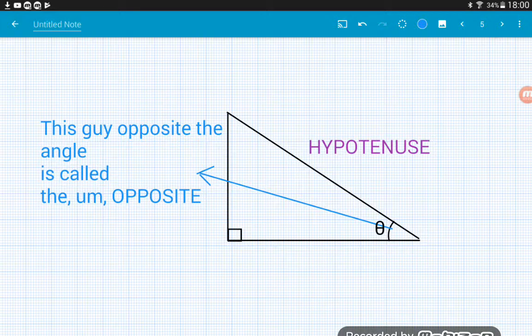Now this side that is opposite the angle, really originally is called the opposite. Now sometimes when I'm teaching this and people find it hard to see, I tell them to imagine the angle looks a little bit like an eye and the side that it's looking at is opposite to it. So it's the opposite side.